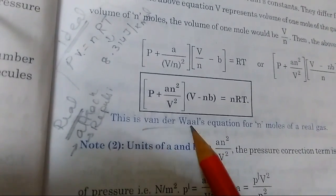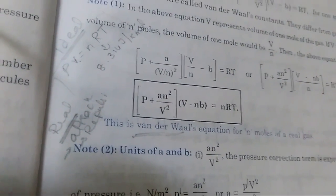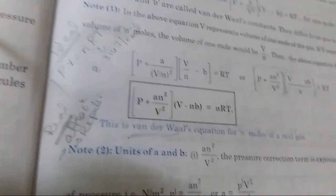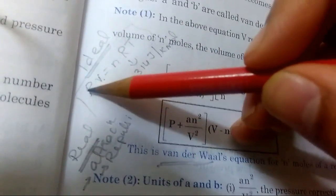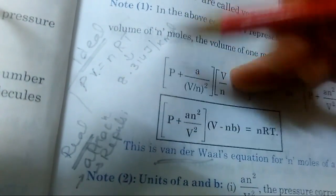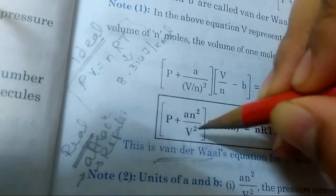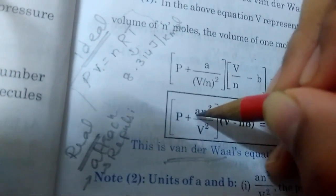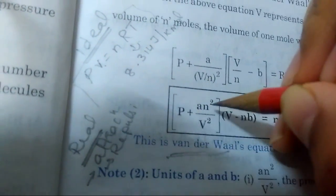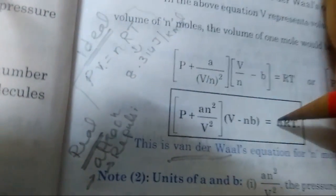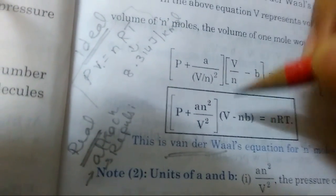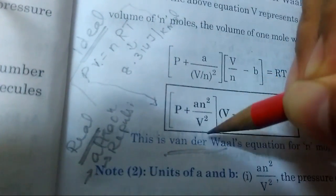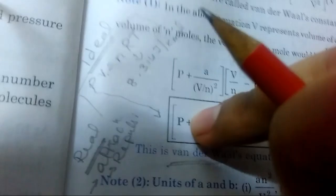This was given by scientist Mr. van der Waals - the same scientist who started with van der Waals force of attraction and van der Waals radii. He said instead of P, we should account for a correction term which is an² divided by V². To this P, you have to add an²/V². I'll explain a and b later. n is number of moles, V stands for volume.